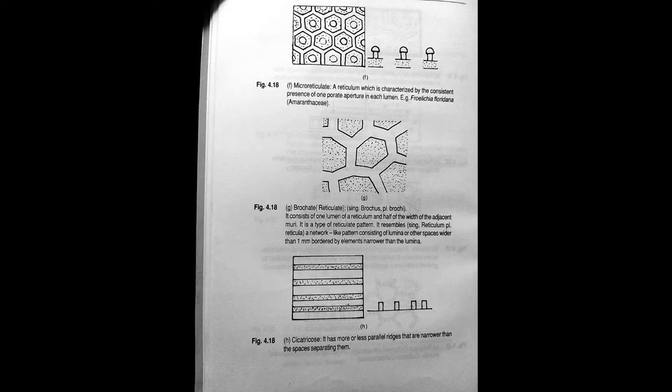Next we come to brochate, also called reticulate. It consists of one lumen of a reticulum and half of the width of the adjacent muri. It is a type of reticulate pattern. It resembles a network-like pattern consisting of lumina or other spaces wider than one micrometer bordered by elements narrower than the lumina.